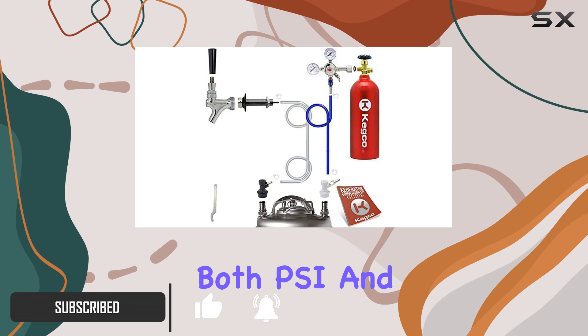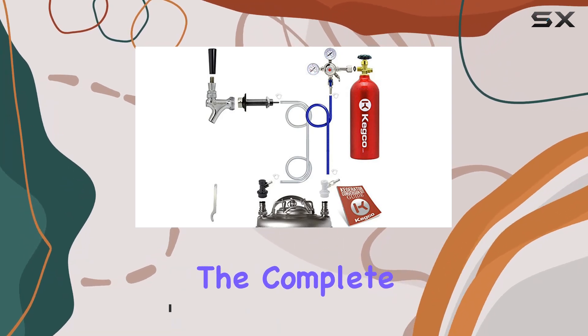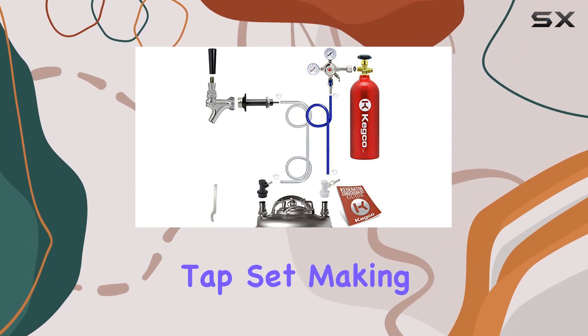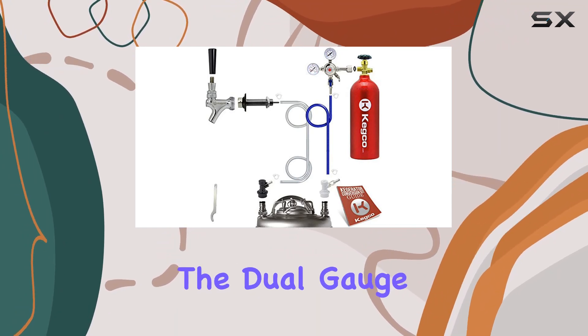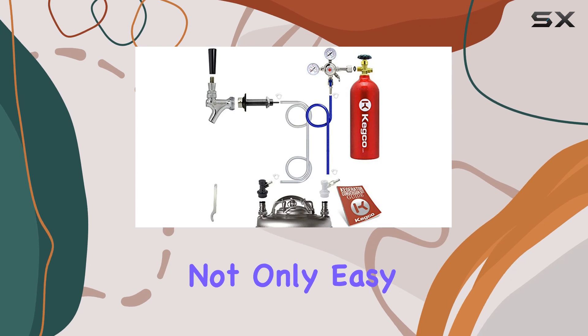...displaying both PSI and CO2 volume to the complete ball lock keg tap set, making tapping those Cornelius Pepsi kegs a breeze. Let's start with the star of the show, the dual gauge regulator. It's not only easy to use...